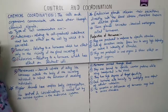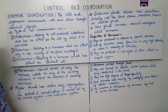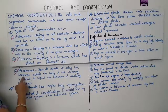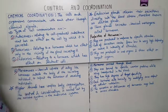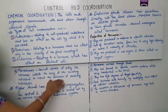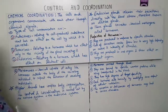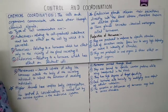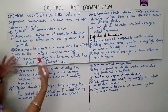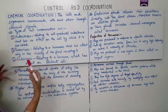Now pheromones — here chemicals are capable of acting like hormones outside the body of the secreting individual to impact the behavior of the receiving individual. So these are the types of cell communication.